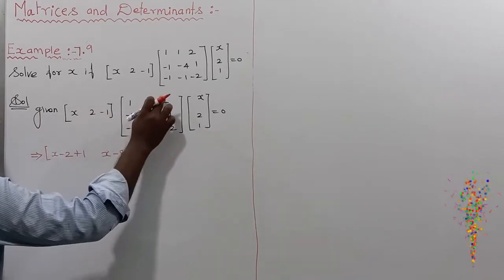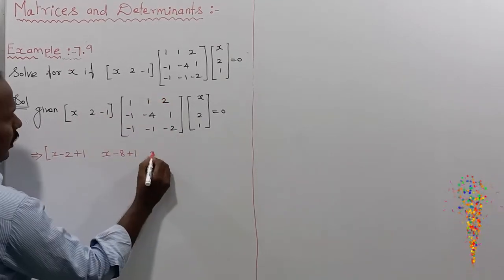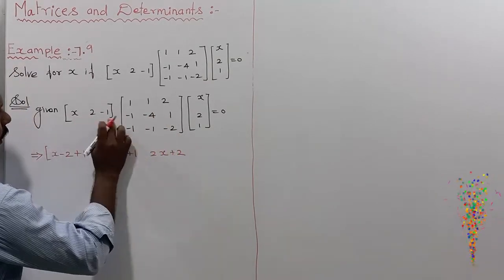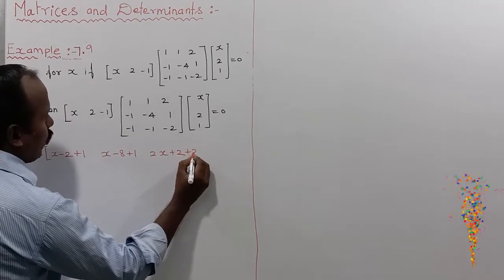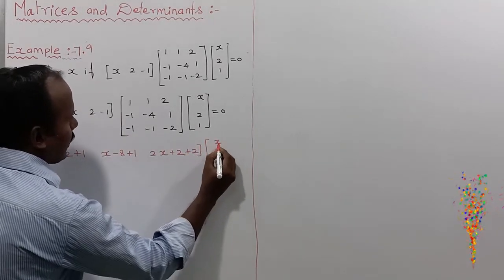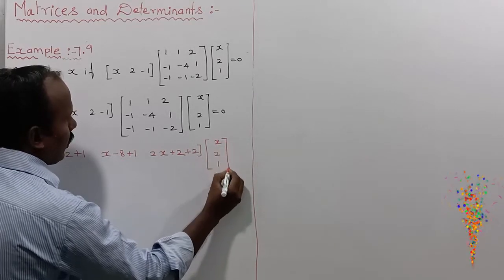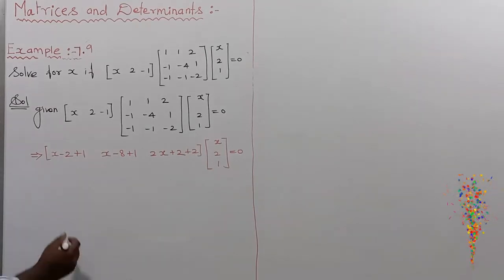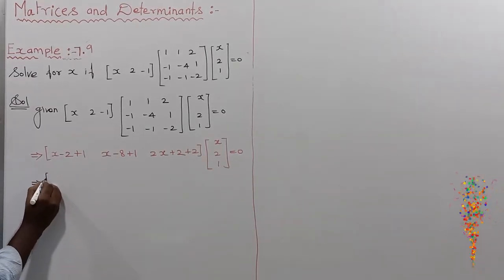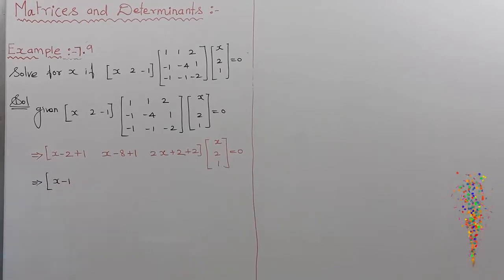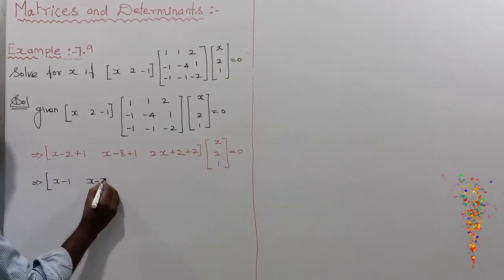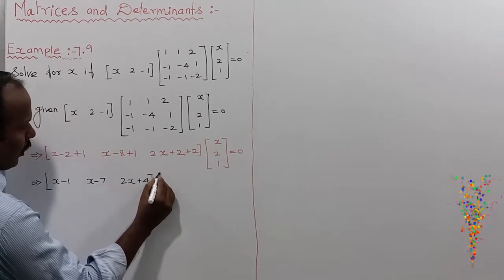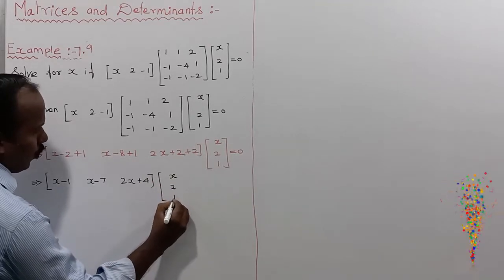First row, third column: 2x + 2 + 2 = 2x + 4. So the result of the first multiplication is the row matrix [x - 1, x - 7, 2x + 4], and the remaining matrix is [x, 2, 1], all equal to 0.